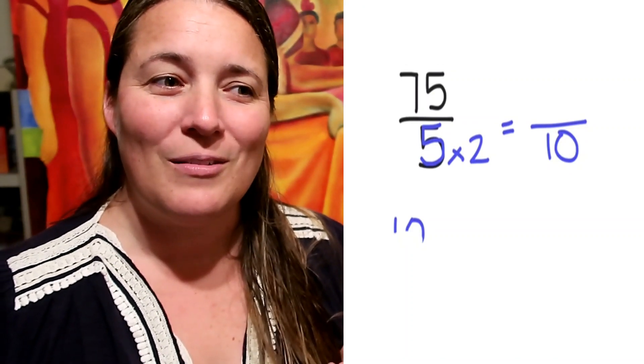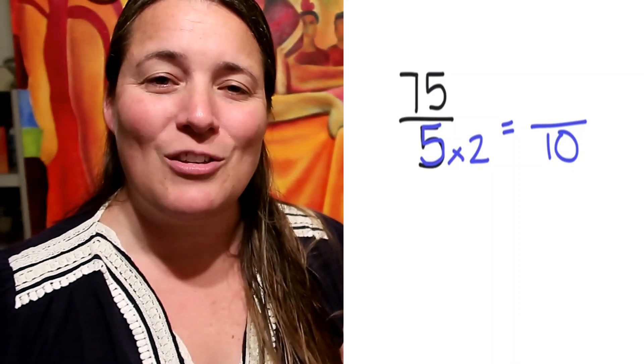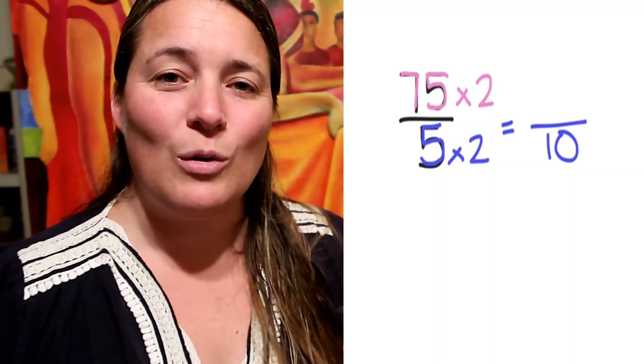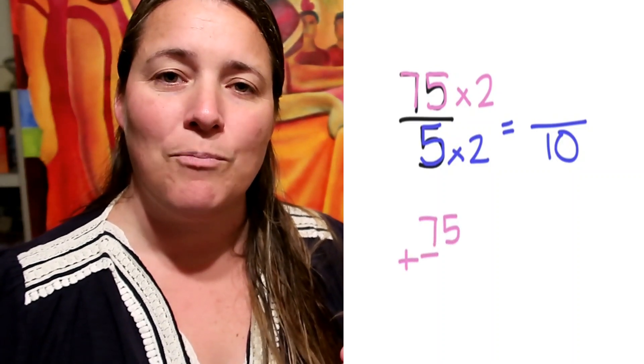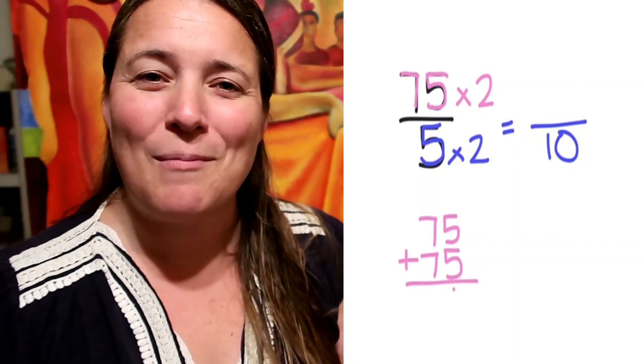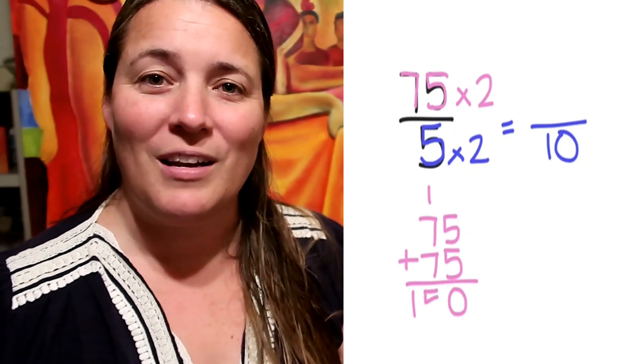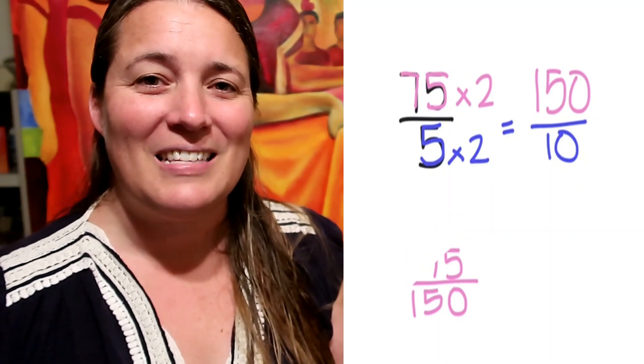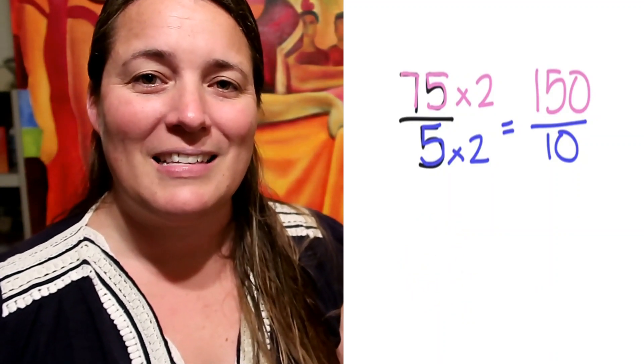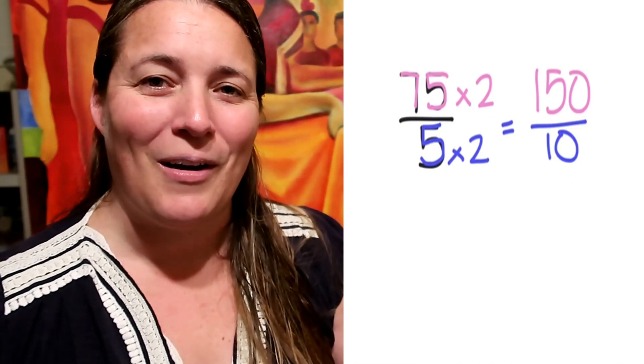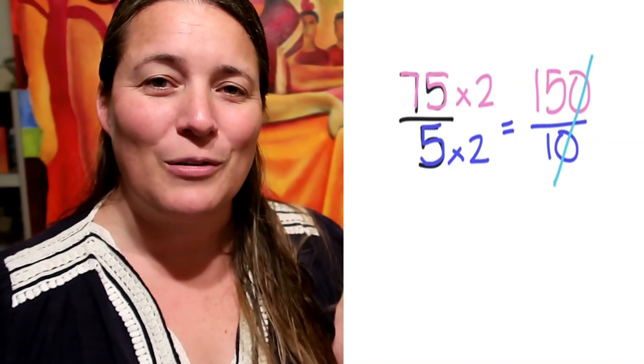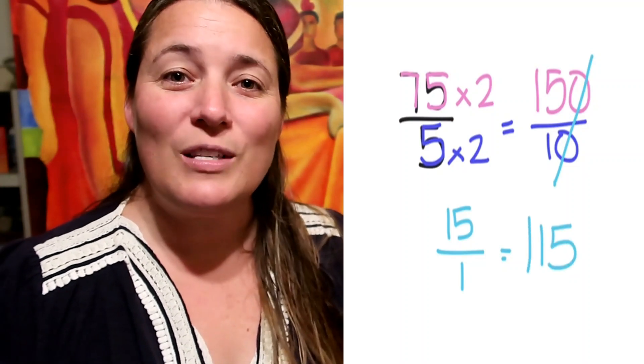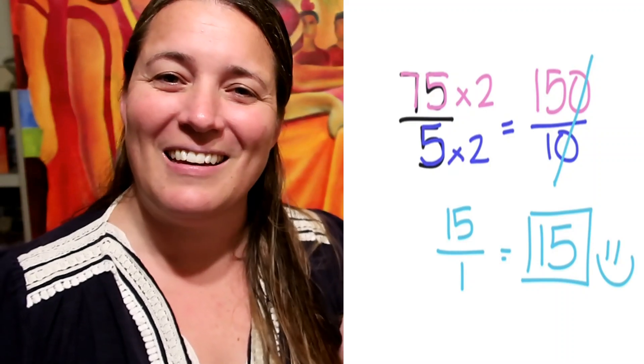And since I multiplied the denominator by 2, I need to multiply the numerator by 2, whatever you're going to do on the bottom, you're also going to do on the top. So 75 times 2, you could think of it as 70 plus 70 plus 5 plus 5, however you want to add it up. And 75 plus 75 is 150. Now you might be thinking to yourself, but I still have to do some division. But the really cool thing here is that if we look at the number 150, it ends in a zero. And if we look at the number 10, it also ends in a zero. When that happens, you can just cross the zeros off. And now what you're left with is 15 over 1. 15 over 1 is the same as 15. So 75 divided by 5 is 15. Pretty cool, right?